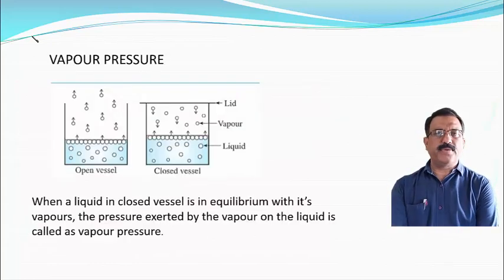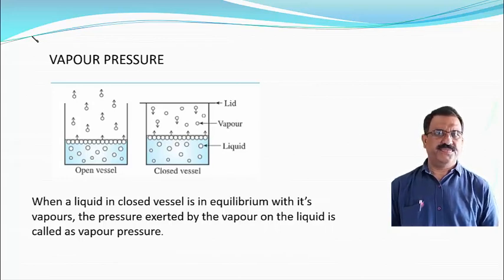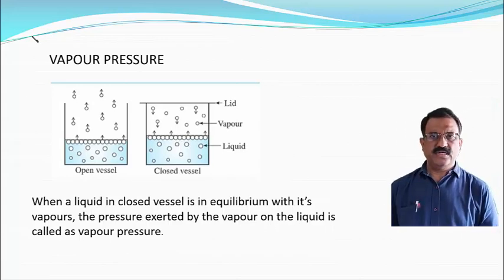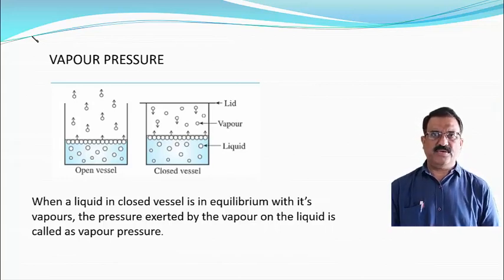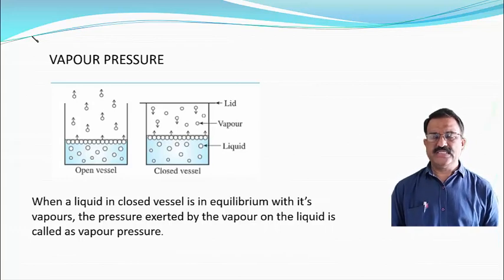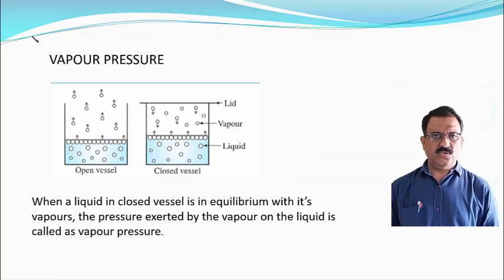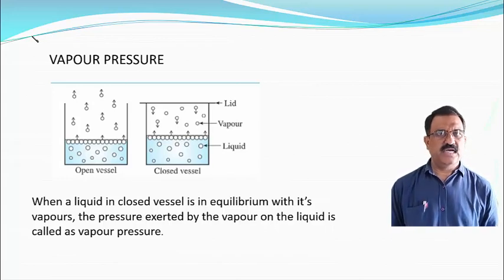The first colligative property is vapour pressure lowering. What is vapour pressure and how does it develop? Suppose a liquid is taken into an open vessel, and the same liquid is taken into another vessel covered by a lid — that is, a liquid in a closed vessel. First of all, we know two different processes: evaporation and condensation.